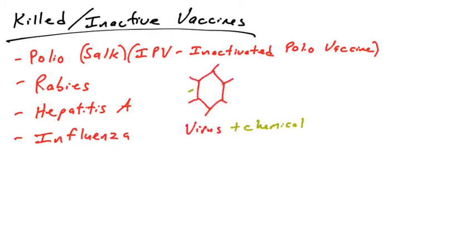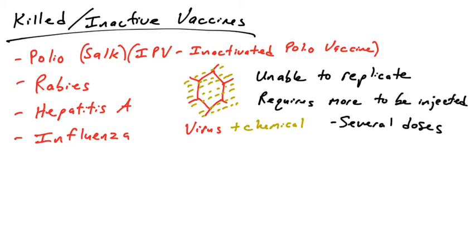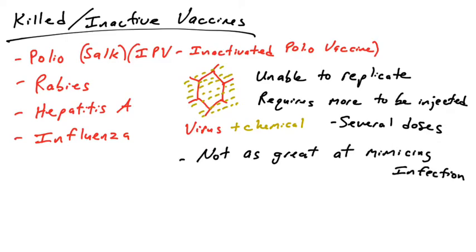In these vaccines, you grow the pathogen in the lab and then treat it with a chemical such as formaldehyde. That chemical attacks the viral proteins, the viral enzymes, and the viral genetic material, such that the virus is unable to replicate. So you have the virus, but it is chemically modified so it will not replicate. Since it can't replicate, it needs to be injected at typically higher doses — you need large amounts of this pathogen to generate an immune response. You might need several doses, several shots, booster shots.